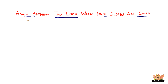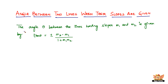In this video, let us find out how to find the angle between two lines when their slopes are given. The angle theta between lines having slopes m1 and m2 is given by tan theta equals plus or minus m2 minus m1 divided by 1 plus m1 times m2.